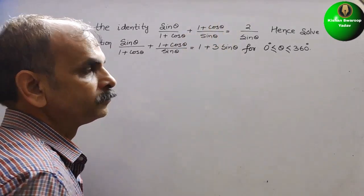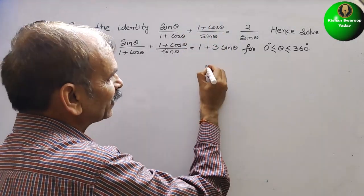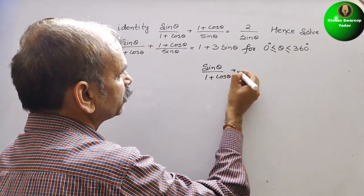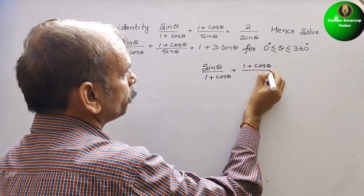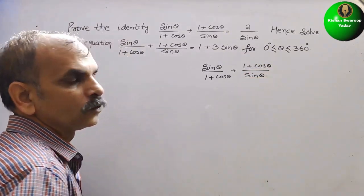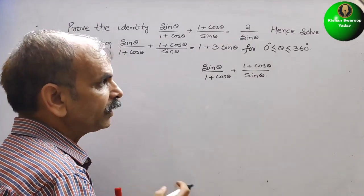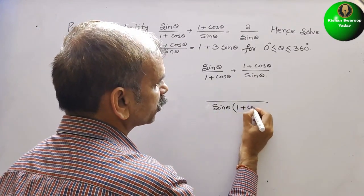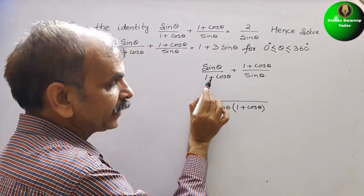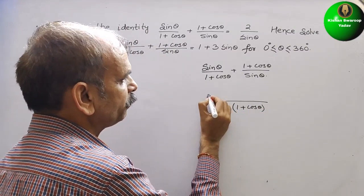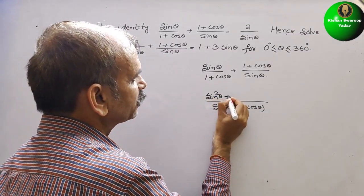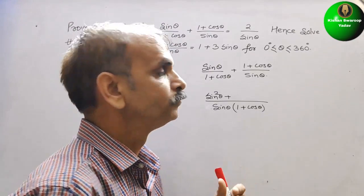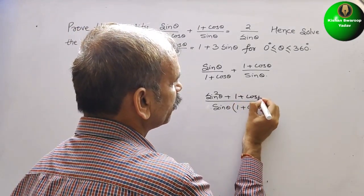First we have to prove this. We have been given sinθ/(1 + cosθ) + (1 + cosθ)/sinθ. We will take the LCM, which is sinθ(1 + cosθ). For the first term, we multiply by sinθ to get sin²θ, and for the second term, we multiply by (1 + cosθ) to get (1 + cosθ)².